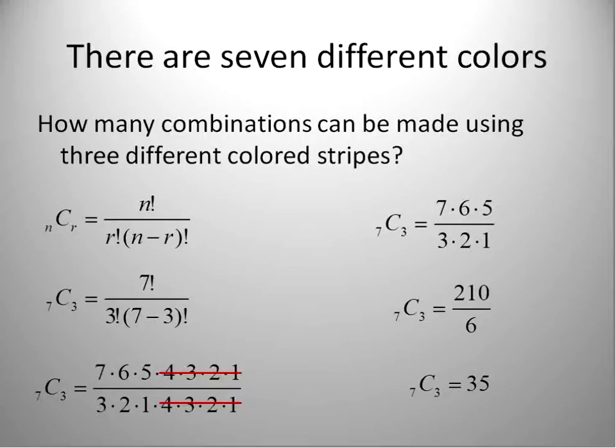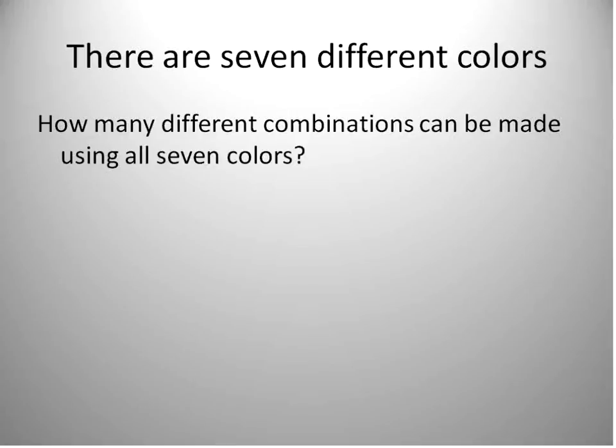I want to show you one more example of a combination. And this one should be pretty obvious from the very beginning. Again, we'll use our seven different colors. How many different combinations can be made using all seven colors? Think about decorating a room with seven different colored streamers or something, and you're trying to use all of those colors at one time. How many different combinations can be made? It should be pretty obvious that there's only one combination that you could ever make.